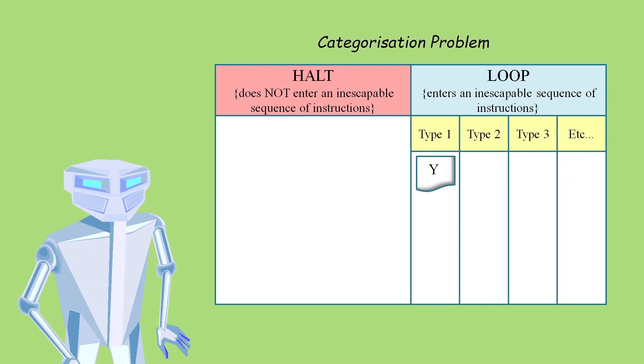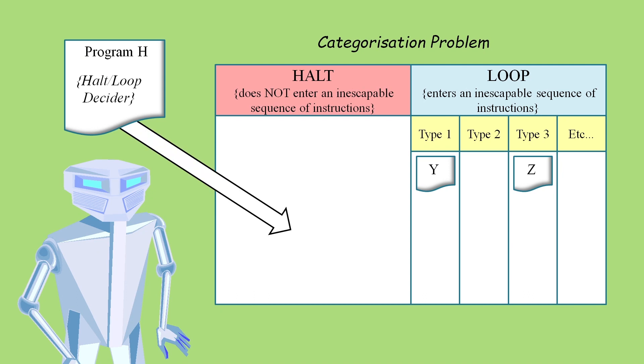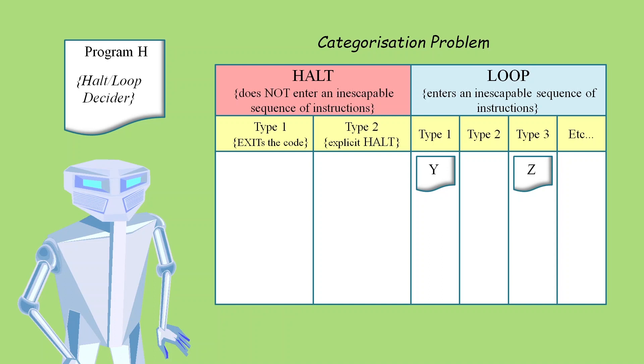A certain program plus its data might be classified as a certain type of loop whereas another program with its data might be described as a different type of loop. But when it comes to Program H, the halt loop decider, we simply say it must halt. We don't specify a specific type of halting. But Tara claims that if we did specify one of these two types of halting just described...